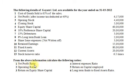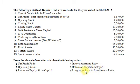1. Net profit ratio. 2. Operating ratio. 3. Return on equity share capital. 4. Interest expense ratio. 5. Return on capital employed. 6. Long-term funds to fixed assets ratio.